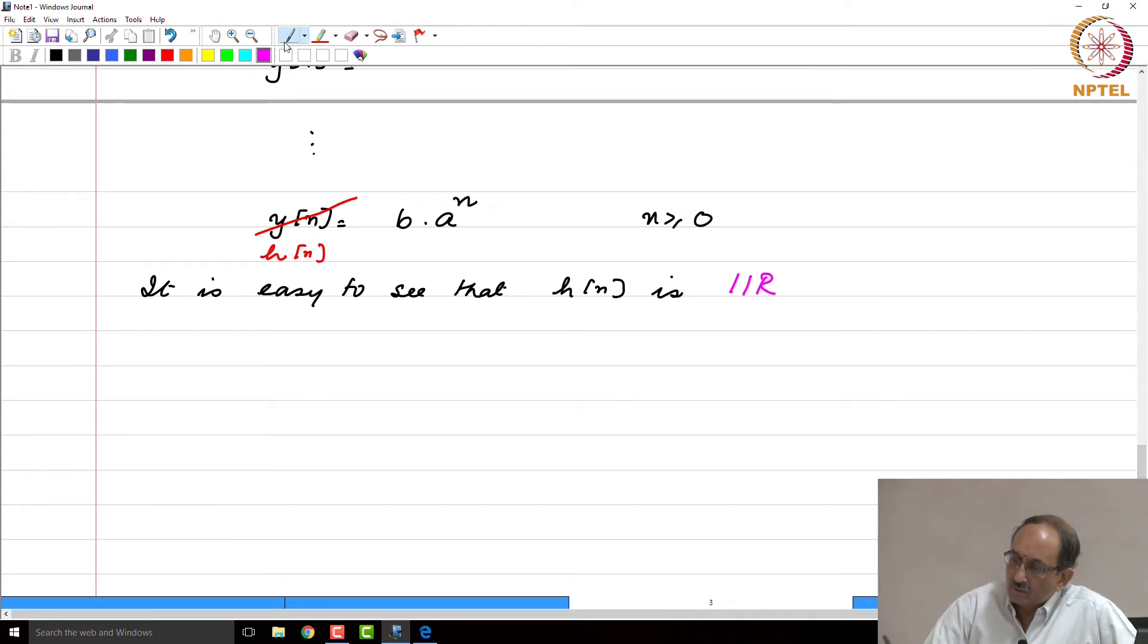Let us look at this particular example: y(n) = b₀*x(n) + b₁*x(n-1) + b₂*x(n-2). This is the input output relationship.